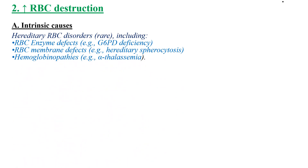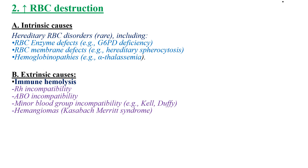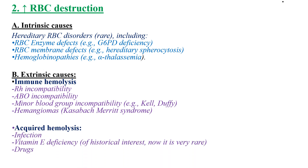The second mechanism is increased RBC destruction. RBC destruction can be due to intrinsic causes such as RBC enzyme defects, RBC membrane defects, and hemoglobinopathies. It can also be due to extrinsic causes, including immune hemolysis such as Rh or ABO or minor blood group incompatibility, or acquired hemolysis such as infection, vitamin E deficiency, and drugs.